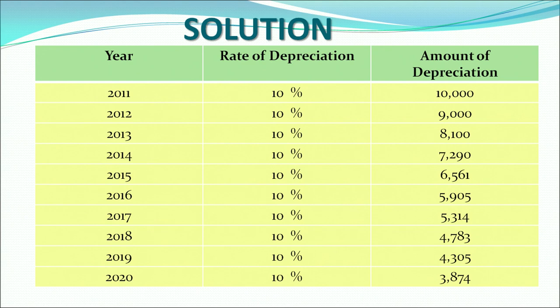An important point: the amount of depreciation keeps on declining and does not remain constant. What remains constant is the rate of depreciation being charged on the book value of the asset. This contrasts with the straight line method, where the amount of depreciation was constant and did not change till the useful life of the asset.